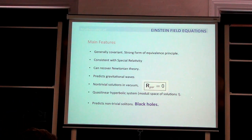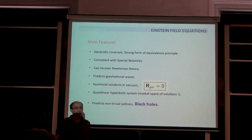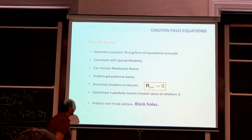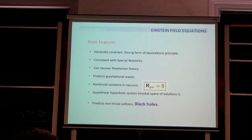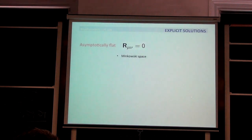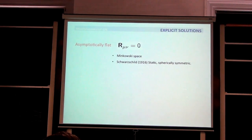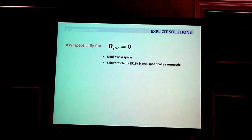The equations predict nonlinear solutions — very complicated systems of nonlinear equations. There are solitons present, and these are in fact the famous black holes. Now let's talk about explicit solutions. Starting with Karl Schwarzschild in 1916 who discovered the Schwarzschild solution, one always looks for solutions with certain symmetries such as spherical symmetry, static or time-independent solutions.